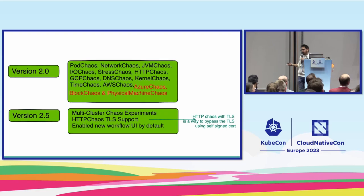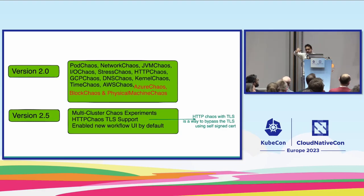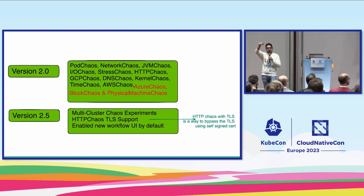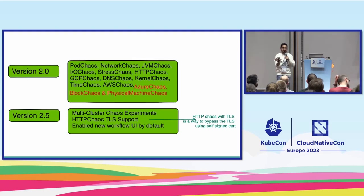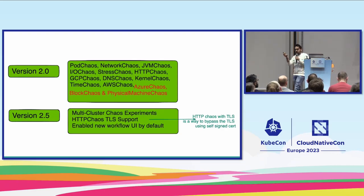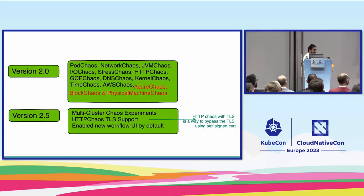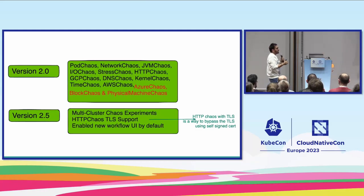In 2.5, you have multi-cluster chaos experiments, which is something new that we'll also see in the demo. Basically, you install chaos mesh on one cluster, connect a remote cluster to it, and you'll be able to run experiments from cluster 1 that actually execute on cluster 2 — that's the multi-cluster kind of chaos experiment. HTTP chaos with TLS support is also new — it's a way to bypass TLS using self-signed certs. And the new workflow UI is now enabled by default. I'll show you both the previous one and the new one. When you install the newer version of chaos mesh 2.5, you get the new workflow out of the box.